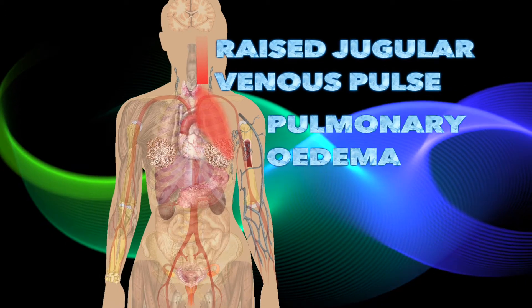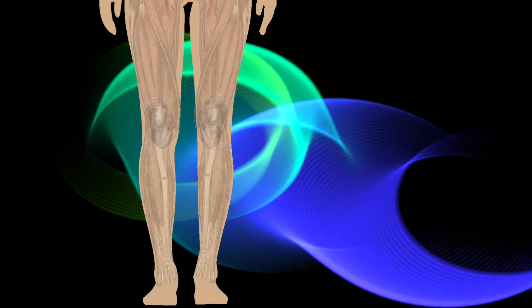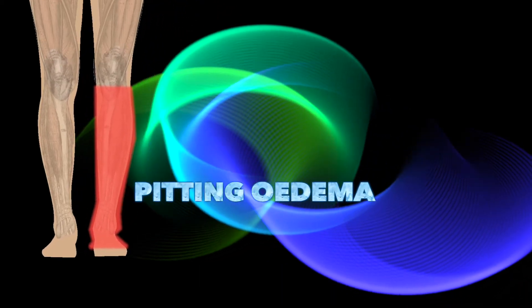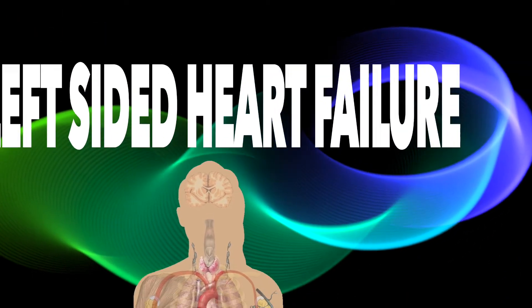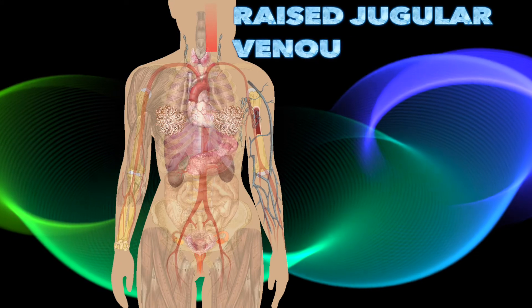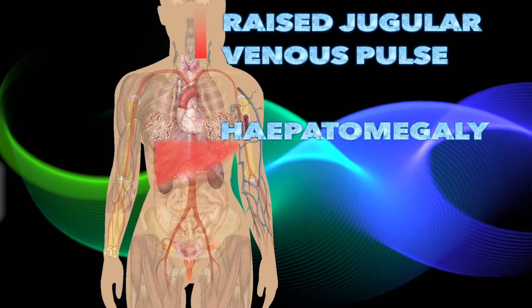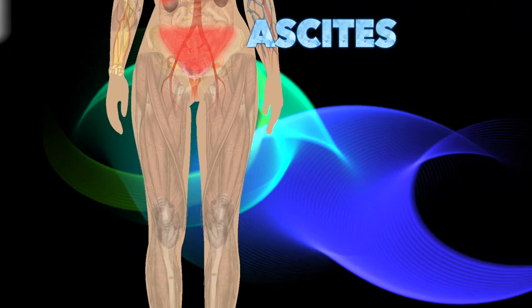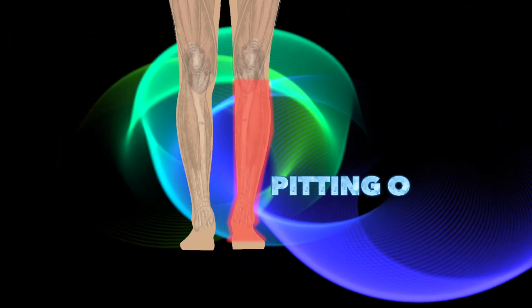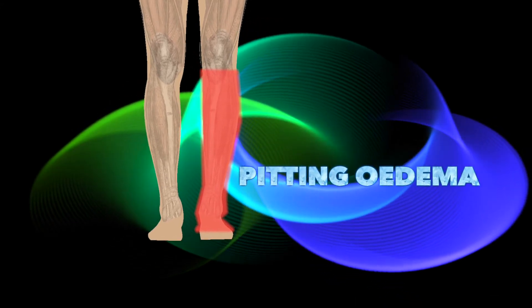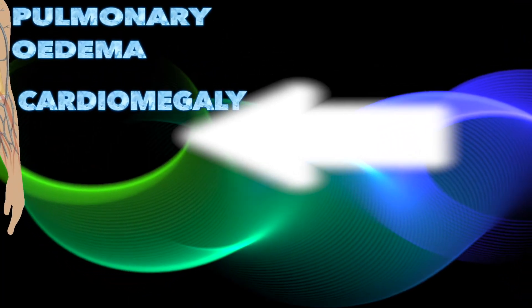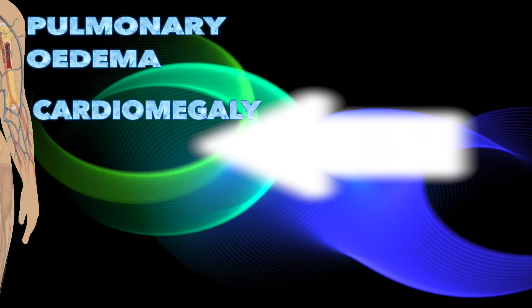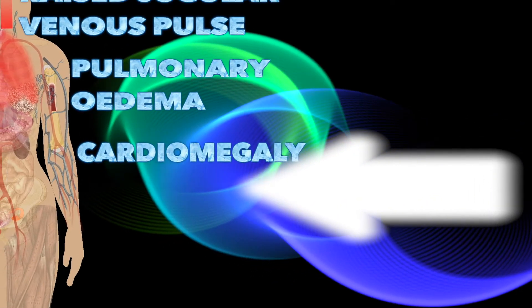Signs of heart failure also include pulmonary edema, cardiomegaly, and pitting edema in the lower limbs. In left-sided heart failure there is raised jugular venous pressure and crepitations, and edema in the lower limbs may also be present.